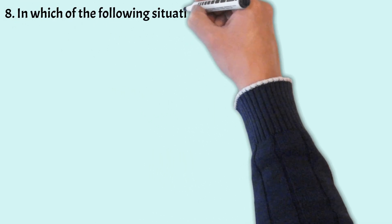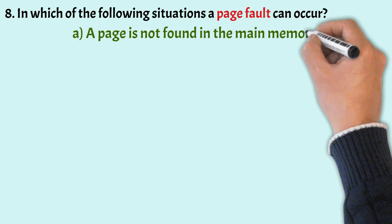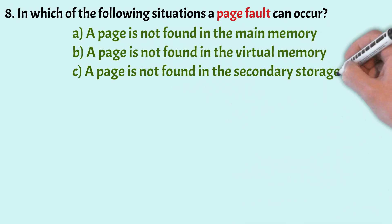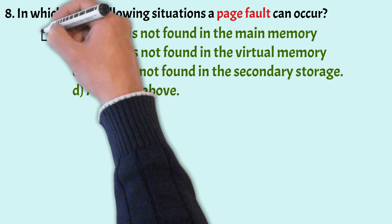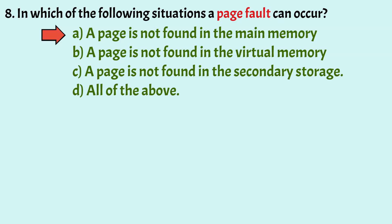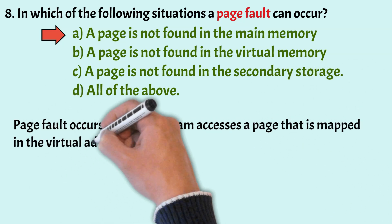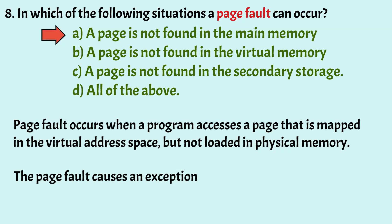In which situation can a page fault occur? Options: a page is not found in the memory, a page is not found in virtual memory, a page is not found in secondary memory, or all of the above. The correct option is Option A — a page is not found in main memory. A page fault occurs when a program accesses a page mapped in virtual address space but not loaded in physical memory, causing an exception that notifies the OS to retrieve the pages from secondary memory into main memory.